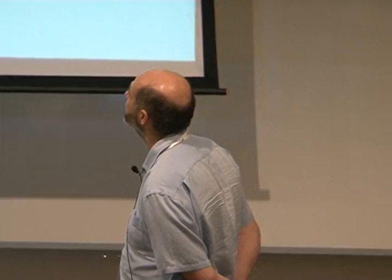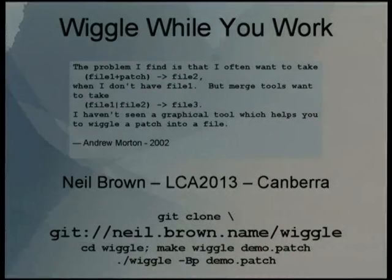The problem Andrew Morton describes is: he often wants to take a file plus a patch, where the patch doesn't apply perfectly, and merge them to create a new file. He hadn't seen a graphical tool which helps you wiggle a patch into a file. So I wrote a program that would wiggle a patch into a file. For a long time it wasn't graphical at all — I found I could solve 90% of the problem with just command line and text.